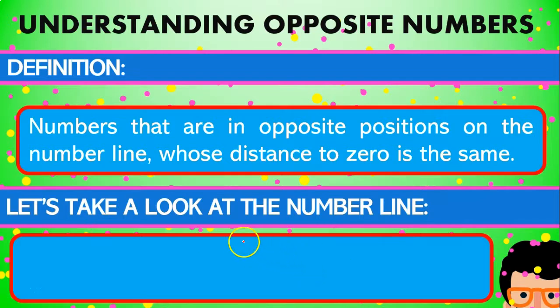So for example, if we have a number like 29 or minus 29, the opposite of that number is going to be positive 29.